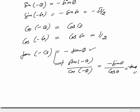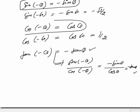To summarize: the only things you should understand are that sine of minus theta equals minus sine theta, and cos of minus theta equals cos theta. That is all about negative angles.